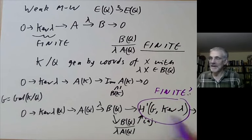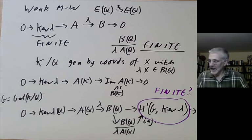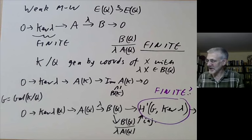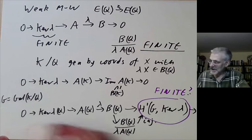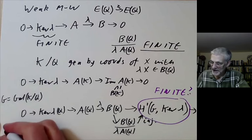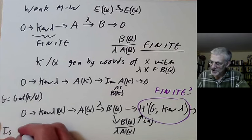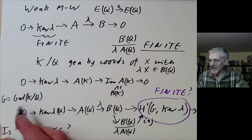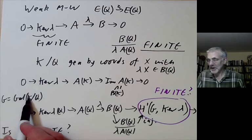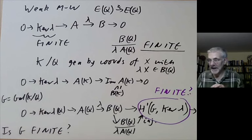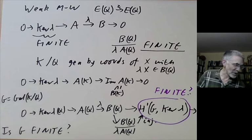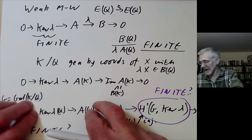Well, the kernel of lambda is certainly finite. And a first cohomology group of G with coefficients in something is finite if G is finite. So we want to know, is G finite? In other words, is the degree of this field extension K over Q finite? If we do that, then we've finished off the proof of the weak Mordell-Weil theorem. So I'll explain how to do that.